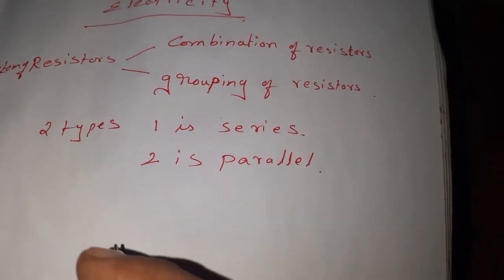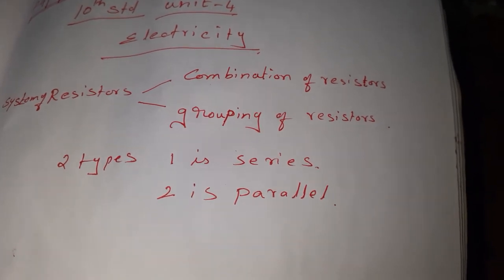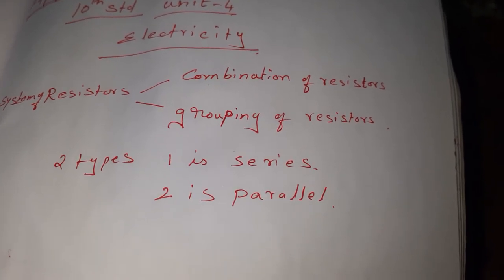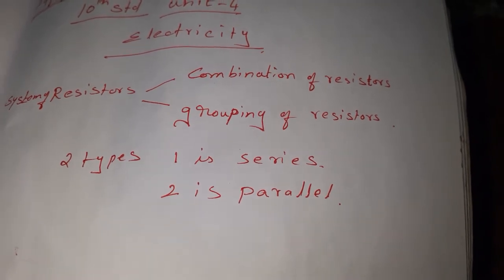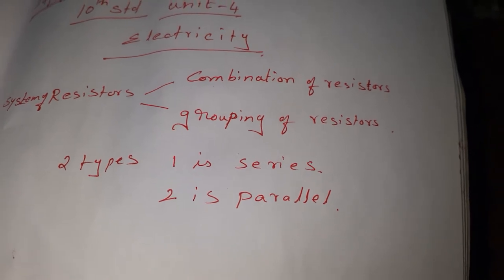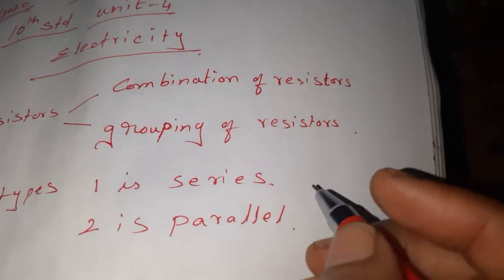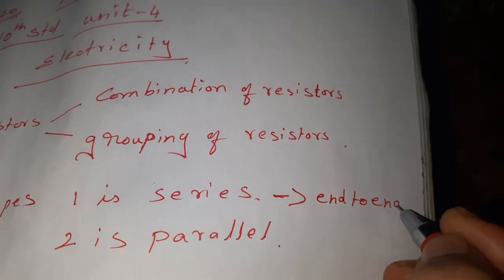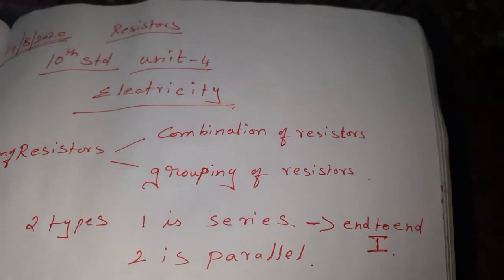Now, the series connection — what do you mean by series connection? Resistors are connected end to end so that the same current passes through each of them. When resistors are connected end to end and the same current passes through each of them, they are said to be connected in series. Same current passes through all of them — it is called a series connection.